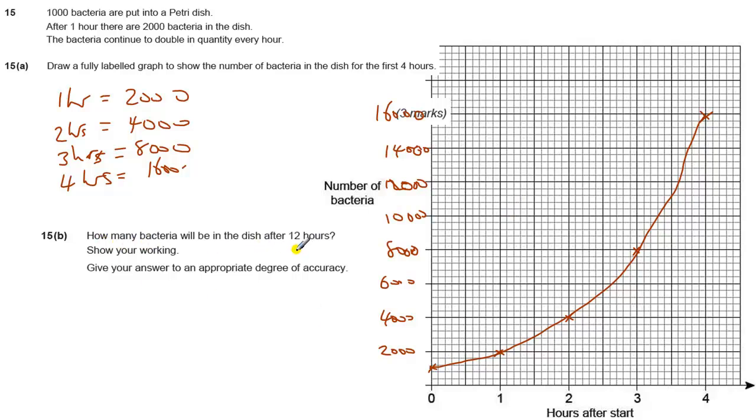Part B: How many bacteria will be in the dish after 12 hours? We can't use the graph here, we need to keep calculating. We could keep typing into the calculator, or figure out the pattern: one hour is 2 times 1000, two hours is 4 times 1000, three hours is 8 times 1000. So that's 2 to the power of 1, 2 to the power of 2, 2 to the power of 3, times 1000 each time.